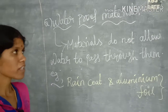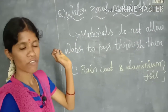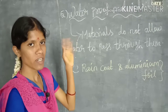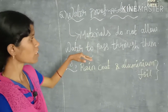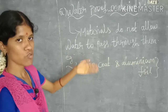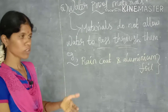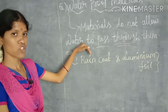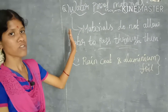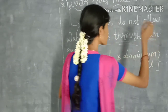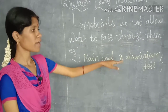The next property is waterproof materials. Waterproof materials means the material which does not allow water to pass through it. For example, we wear a raincoat — that is a waterproof material. The water is stopped and cannot pass through. Examples of waterproof materials are raincoat and aluminium foil.